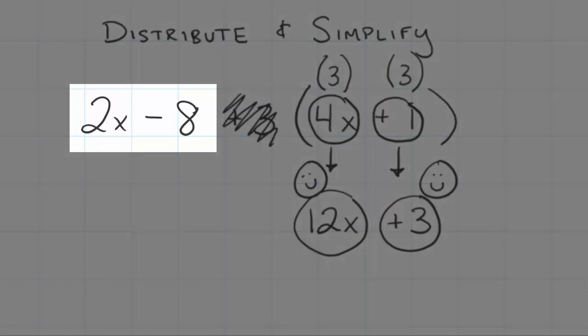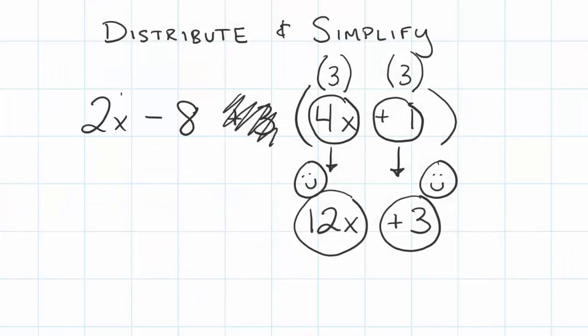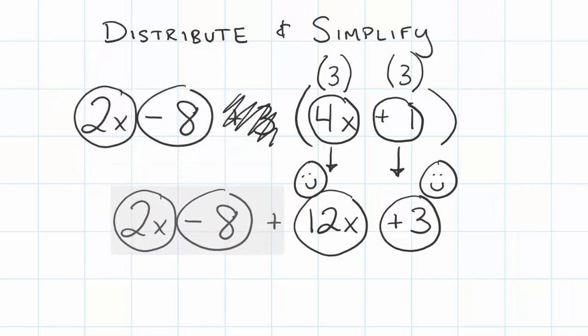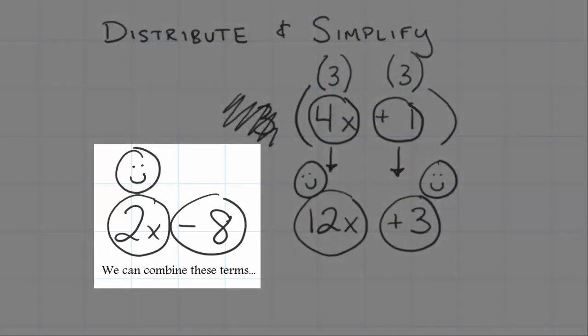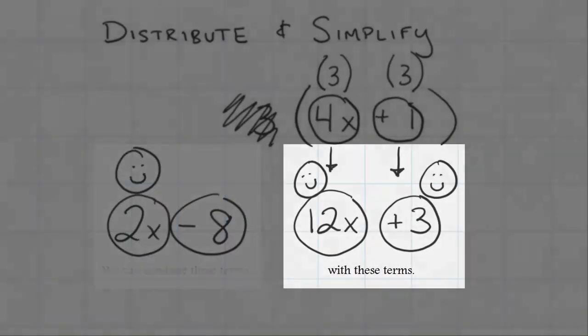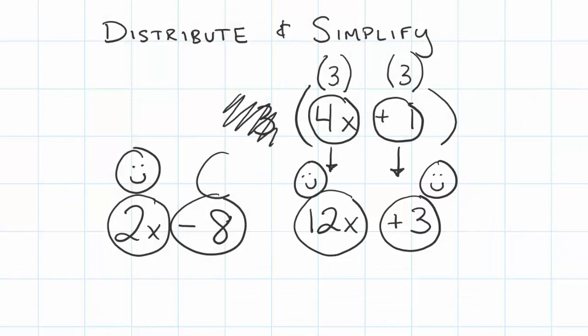What did we still have outside of the parentheses that wasn't part of the distributive property piece? I had a 2x and a negative 8. I'm gonna bring those down. Those are going to be two terms that we're going to combine with our new terms that we've created after we've distributed. So I have a positive 2x and I have a negative 8.